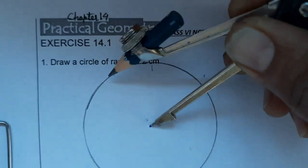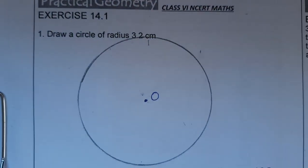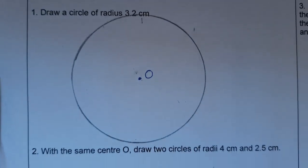So this circle is completed. See, this is a circle of radius 3.2 centimeter. Now the first question is completed. We have drawn a circle of radius 3.2 centimeter. Now we are going to do question number 2.